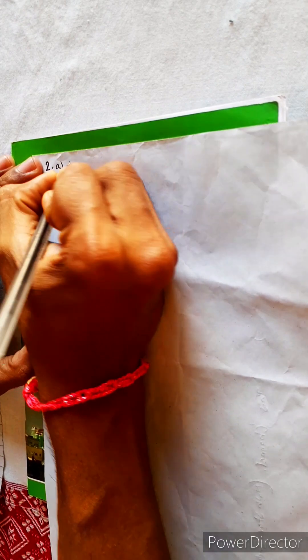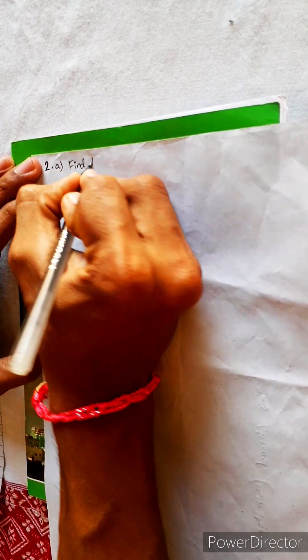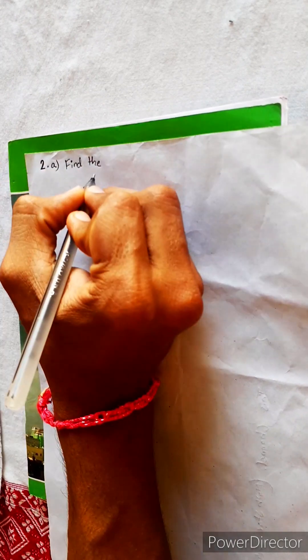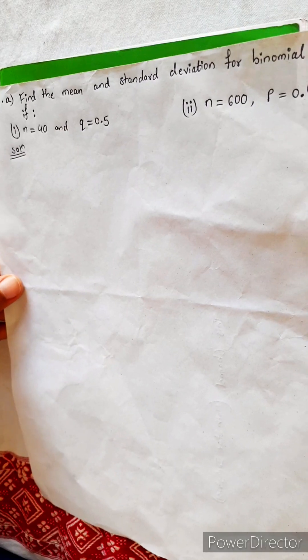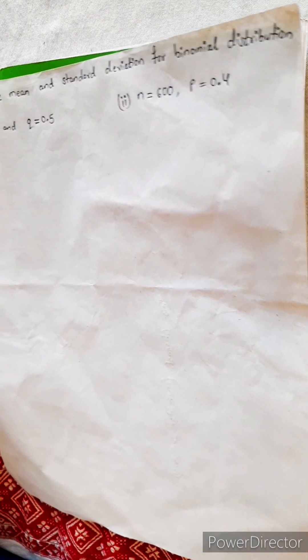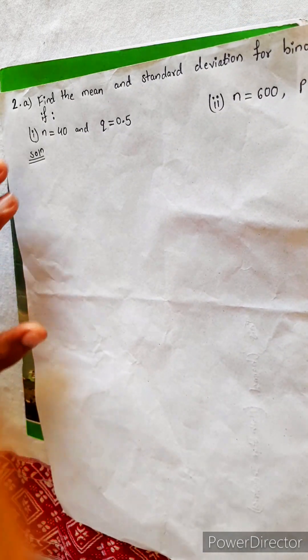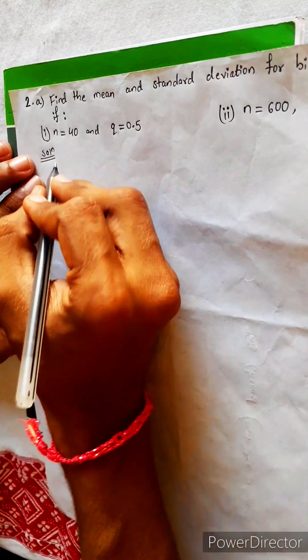Find the mean and standard deviation for both binomial distributions if this case is given.